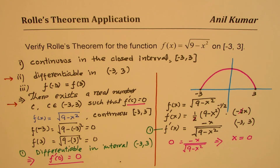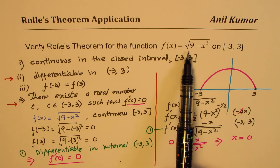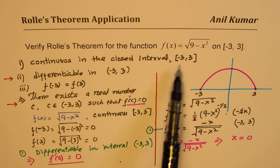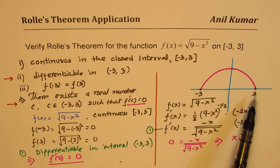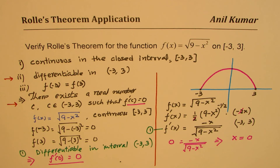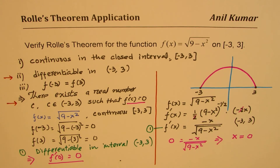So that is how we verify Rolle's Theorem: for a function on a closed interval that is continuous on the closed interval and differentiable on the open interval, there exists a real number c — in this case x = 0 — such that the derivative at that point is 0. These are the critical steps to include in your solution. Thanks for watching and all the best. Feel free to check the playlist for other applications of Rolle's Theorem.